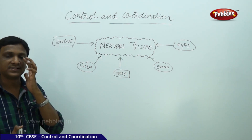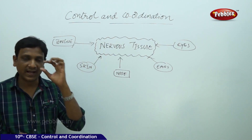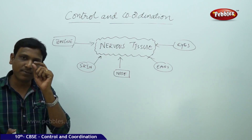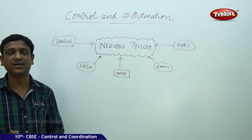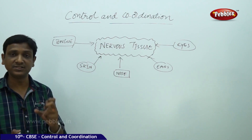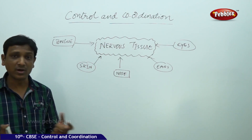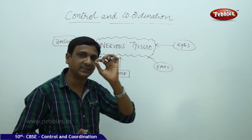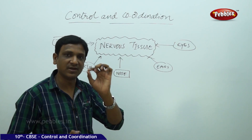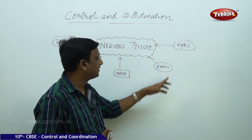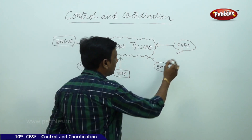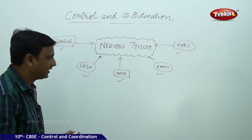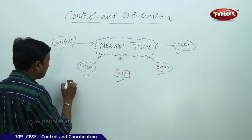We have some receptors in each of these sense organs. A receptor is a specialized nerve cell — specifically, the tip of this specialized nerve cell is called a receptor. The tip of the nerve cell is specialized to identify the change. These nerve cells with specialized tips are found in the sense organs: eyes, ears, nose, skin, and tongue.